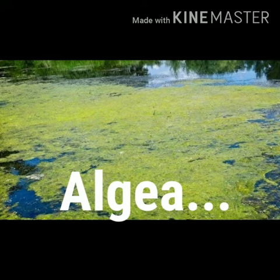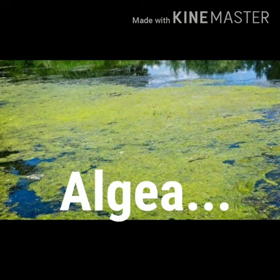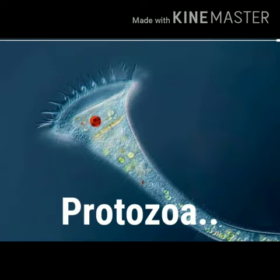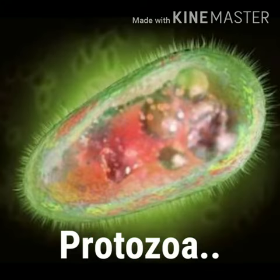The fourth and last one is protozoa. Protozoa are unicellular animals. Some are free-living, while others are parasites. Several parasitic protozoans cause diseases in human beings, domestic animals, and plants. An example is Plasmodium, a protozoan that causes malaria.